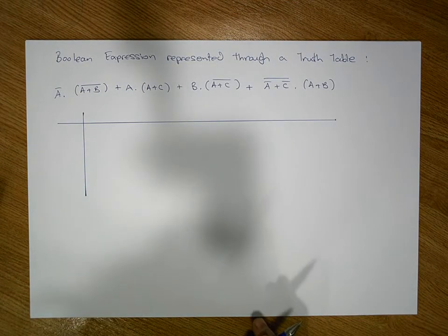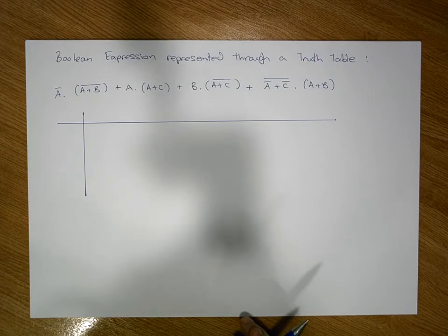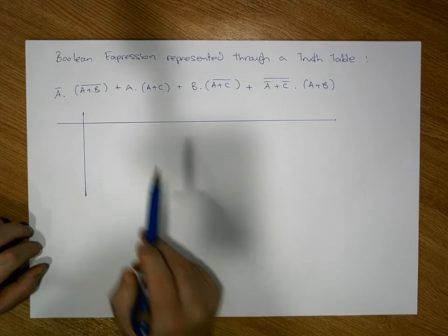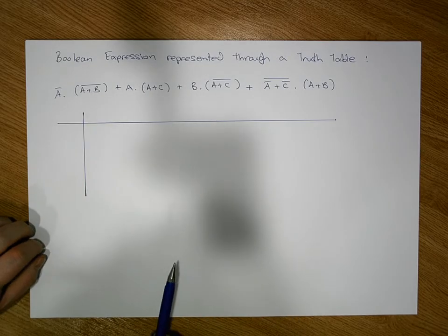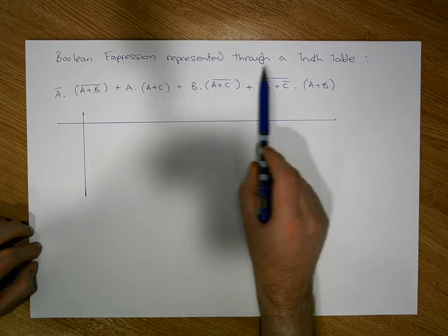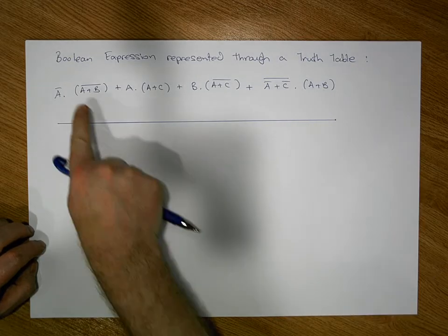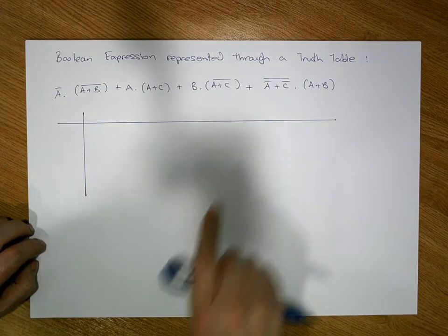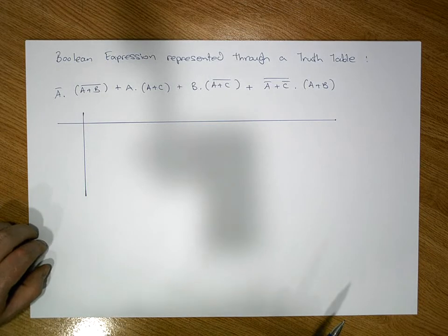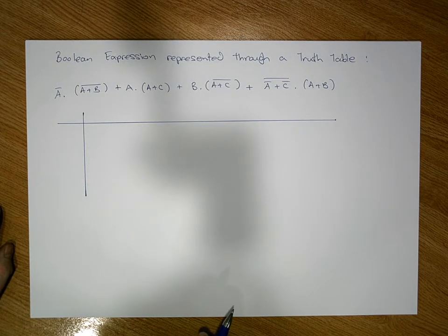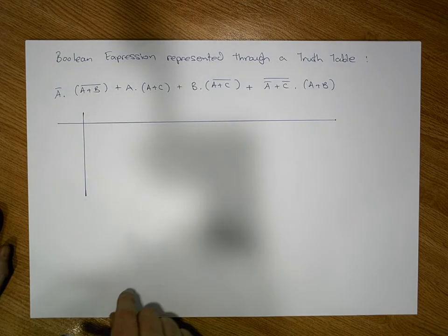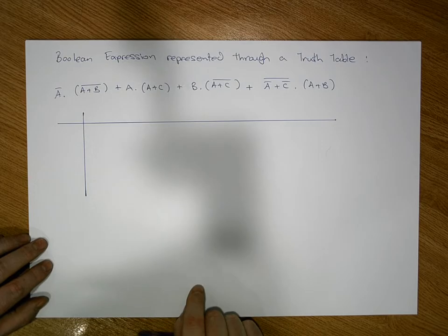Hi guys, this is Jonathan Lambert with the Mathematics Development and Support Service at the National College of Ireland. This short video in the series dealing with Boolean expressions is going to look at how to take a Boolean expression and represent it through a truth table. The expression has four major terms and looks a little complicated, but we're going to take it stage by stage, term by term, left to right.